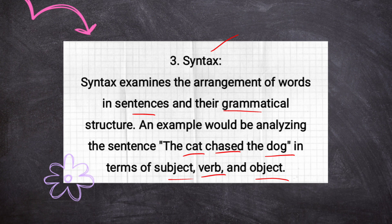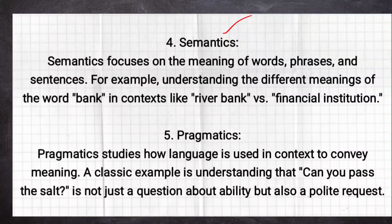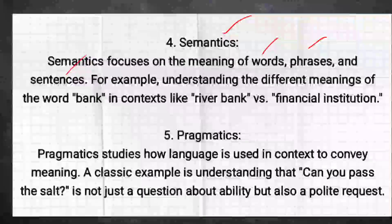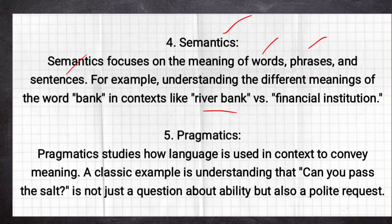The fourth level is semantics. Whenever the word 'semantics' is used, we are talking about meaning. Semantics focuses on the meaning of words, phrases, and sentences. For example, understanding the different meanings of the word 'bank' — it might mean a river bank, or it could refer to a financial institution.